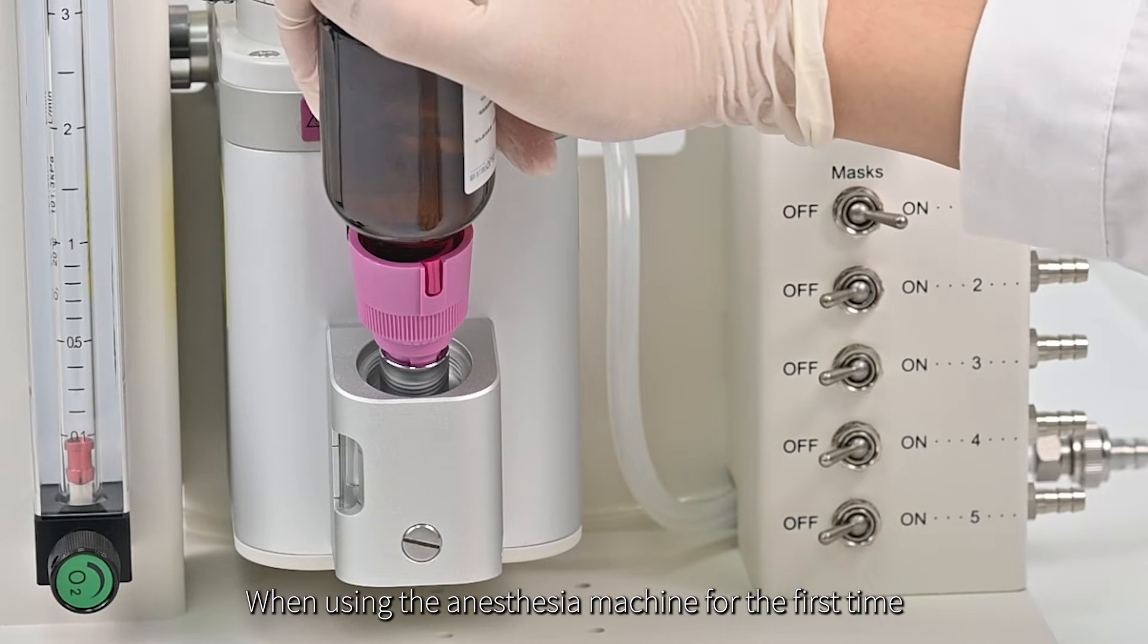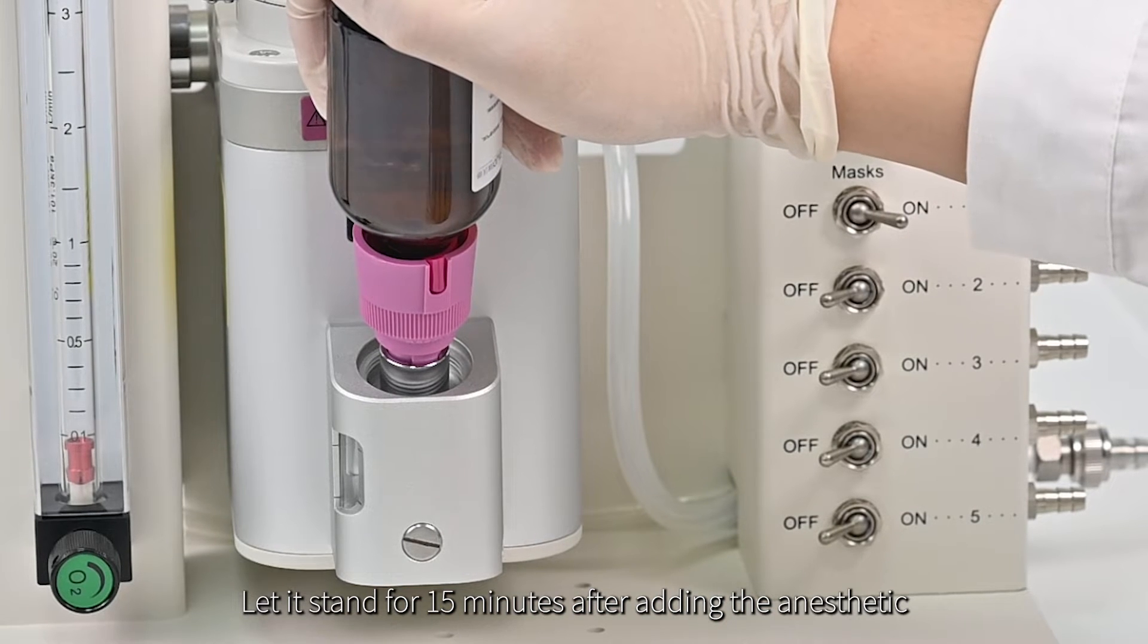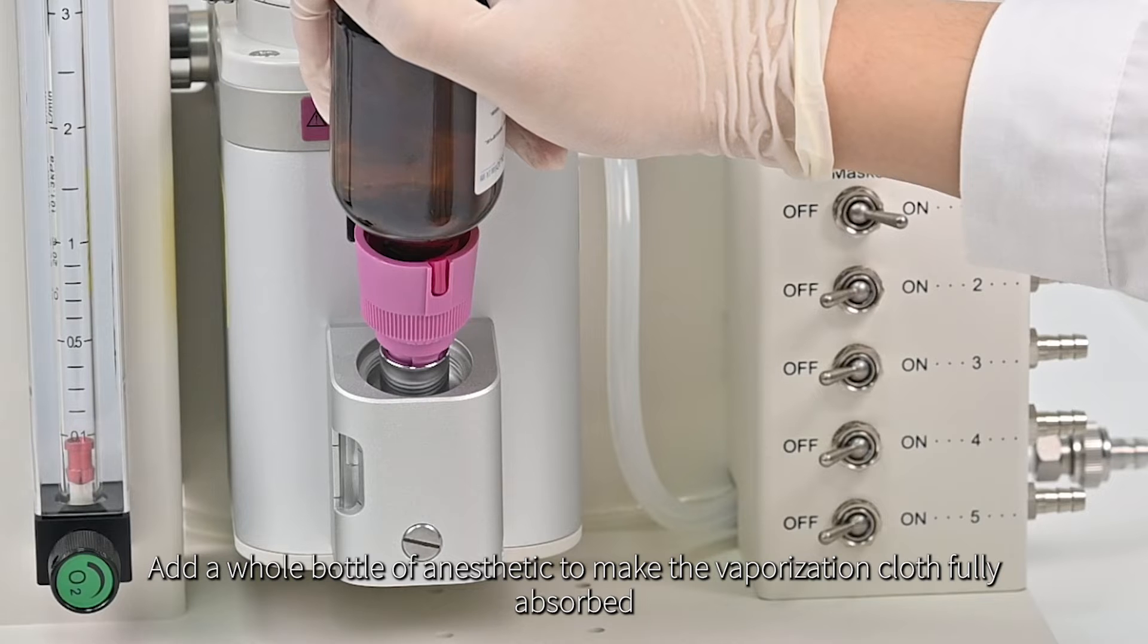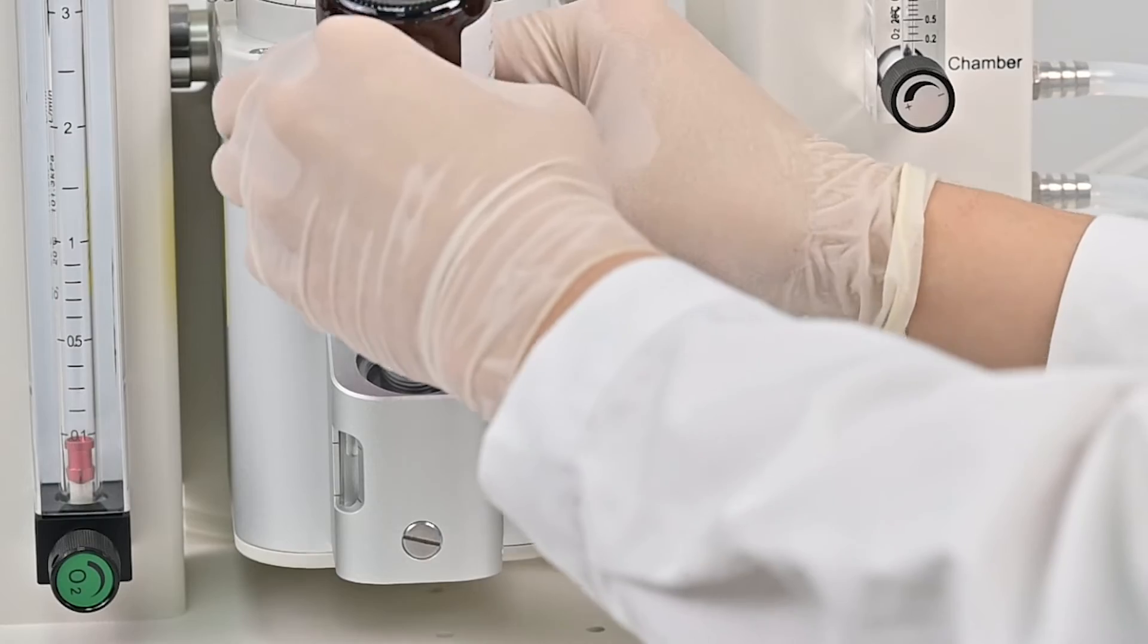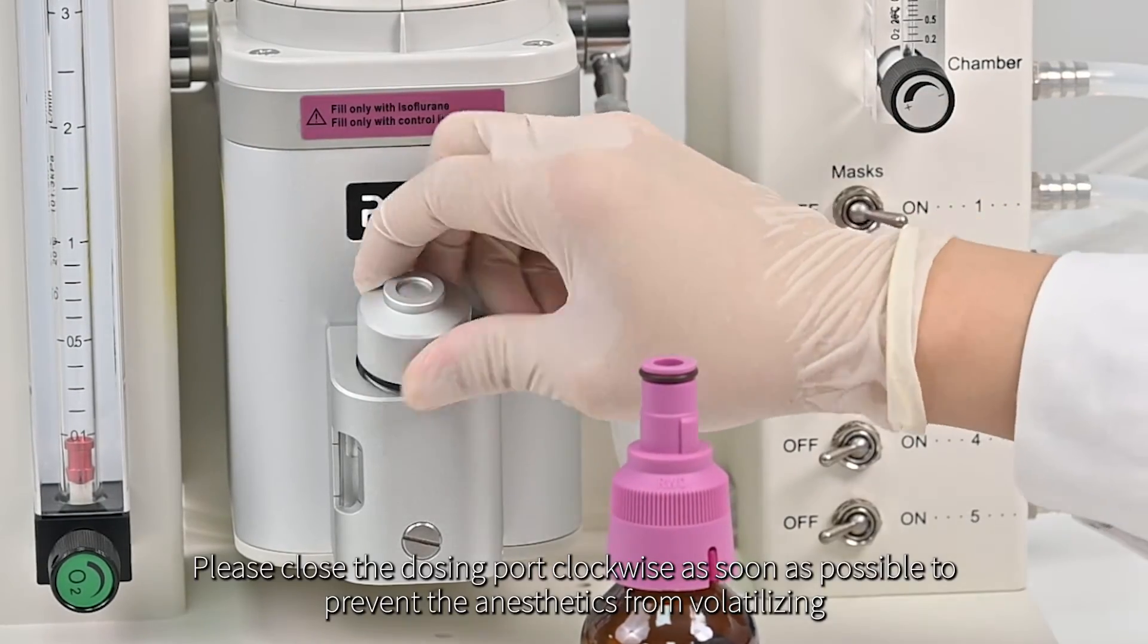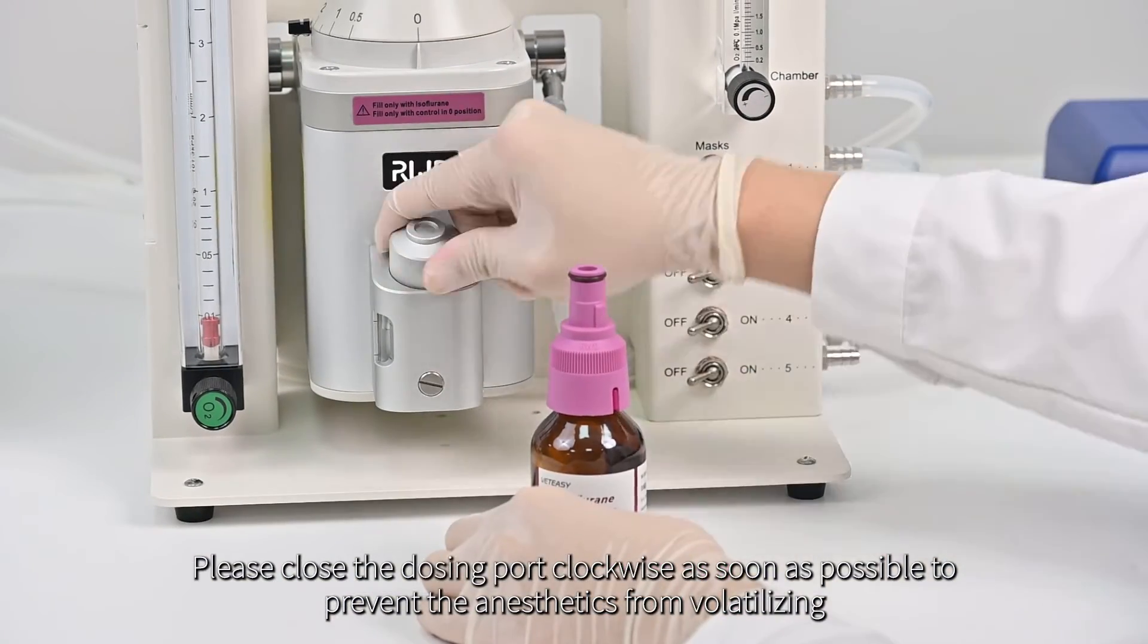When using the anesthesia machine for the first time, let it stand for 15 minutes after adding the anesthetic. Add a whole bottle of anesthetic to make the vaporization cloth fully absorbed. After adding, please close the dosing port clockwise as soon as possible to prevent the anesthetics from volatilizing.